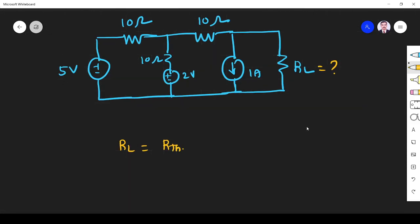How can we find R Thevenin? When we want to find R Thevenin, we have to remove the voltage and current sources, remove the load, and find the resistance across the load. If you remove the voltage source from the circuit it will become short.